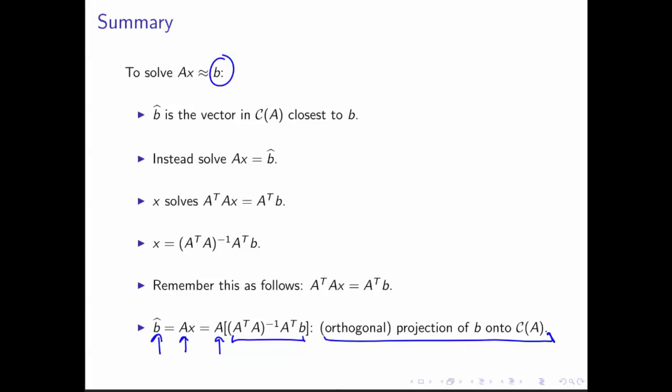The insights from this week set us up for next week when we use orthogonal projection onto the column space of a matrix to do what's known as low-rank approximation of a matrix. And the example that we use to illustrate this will be data compression.